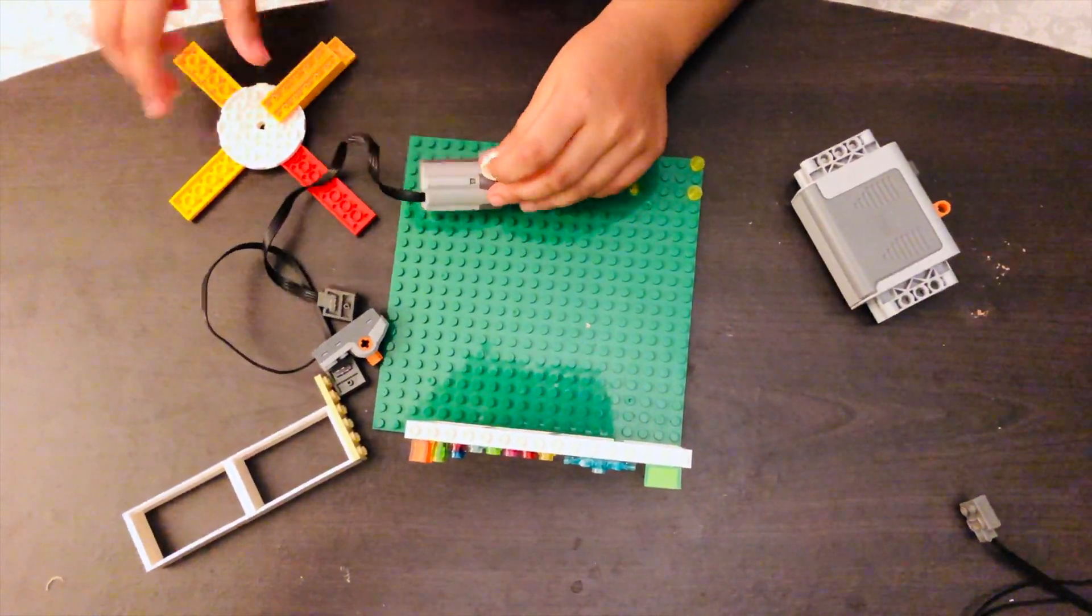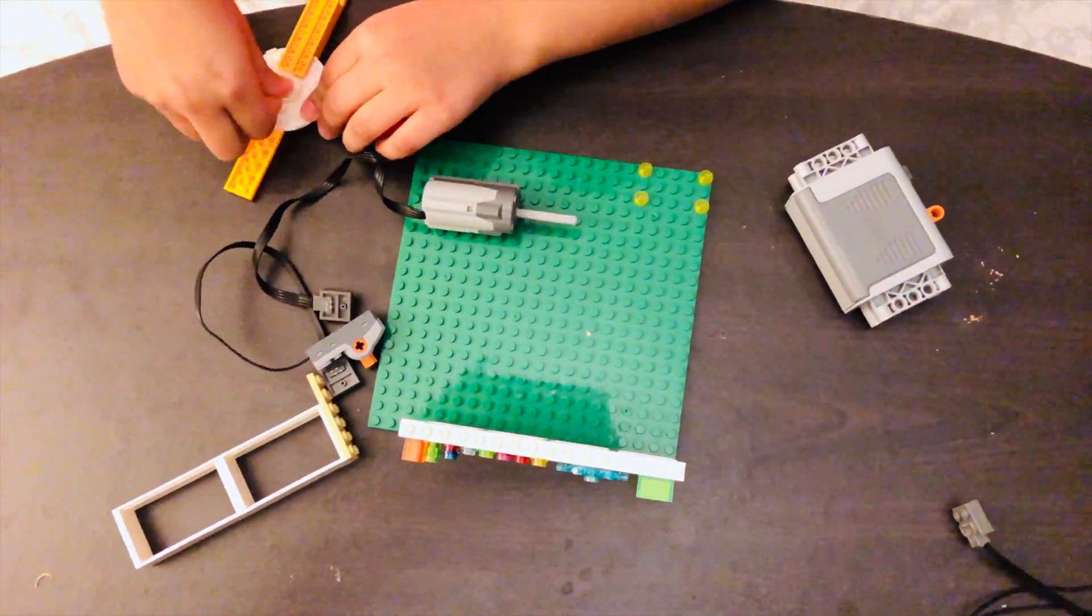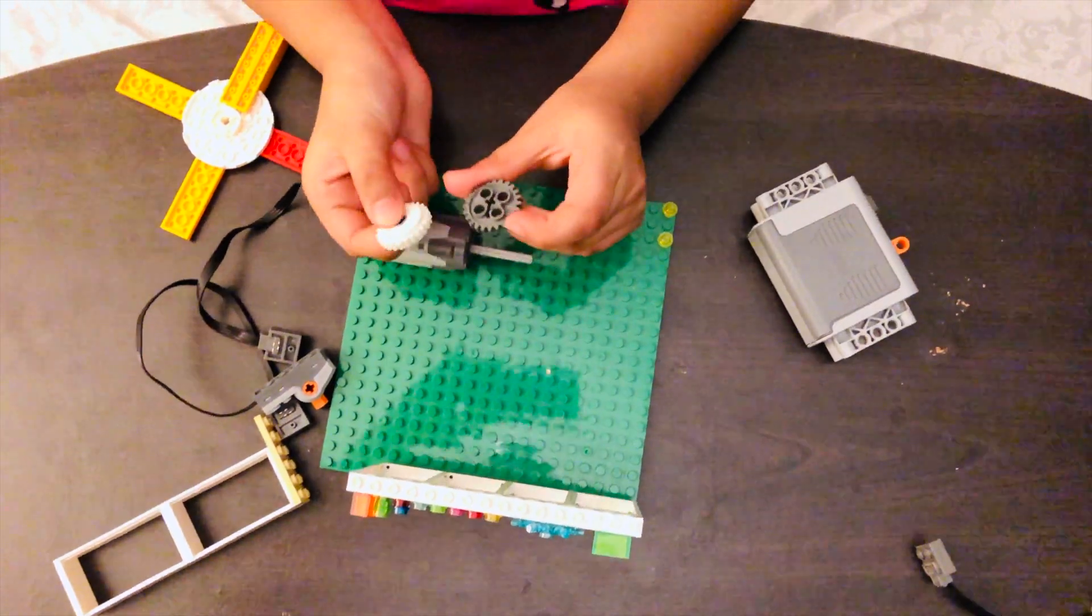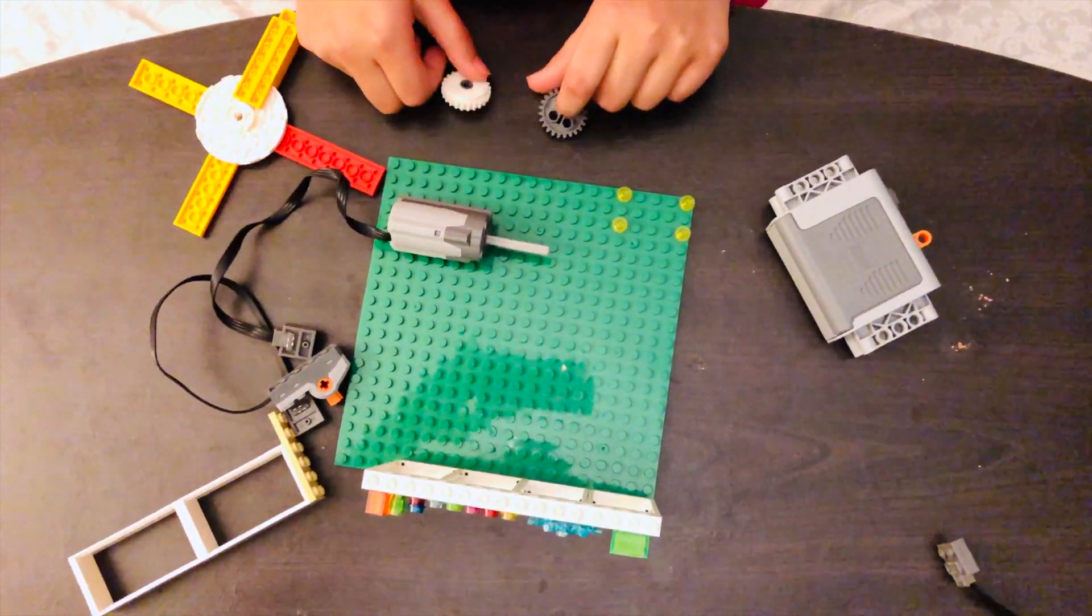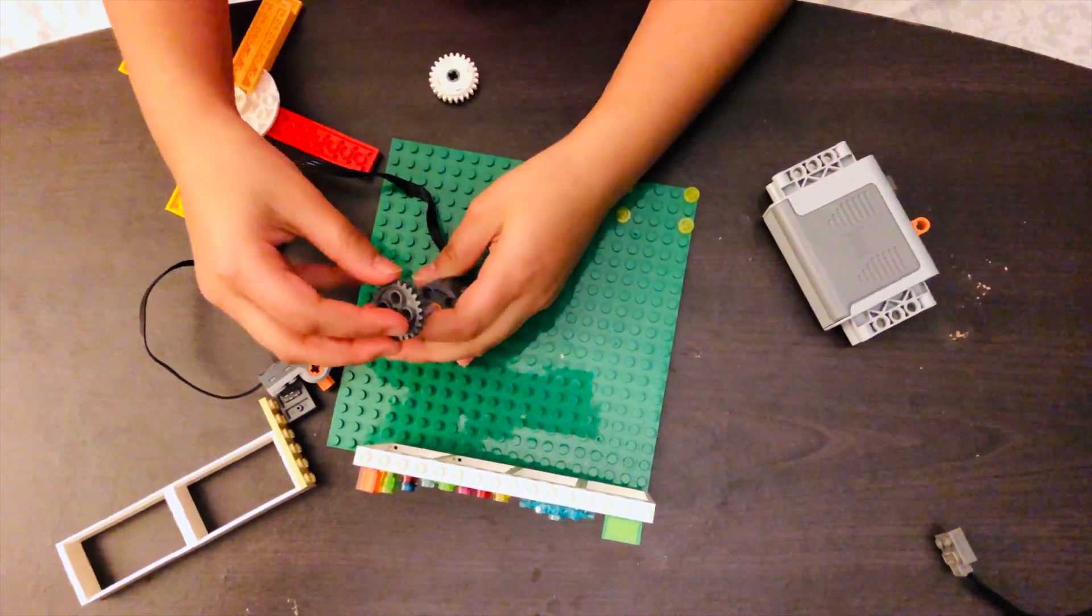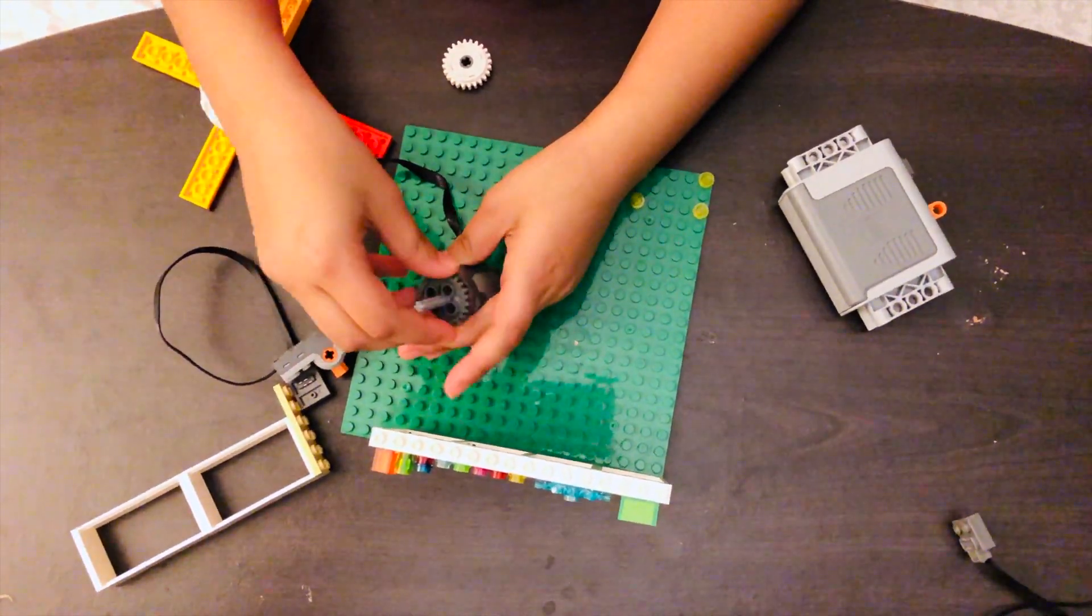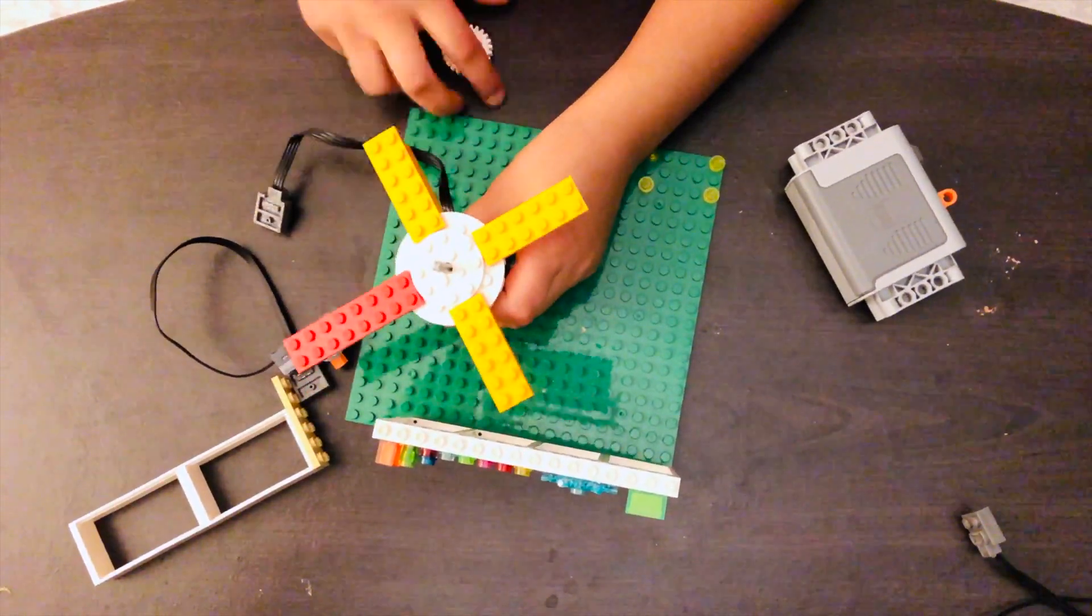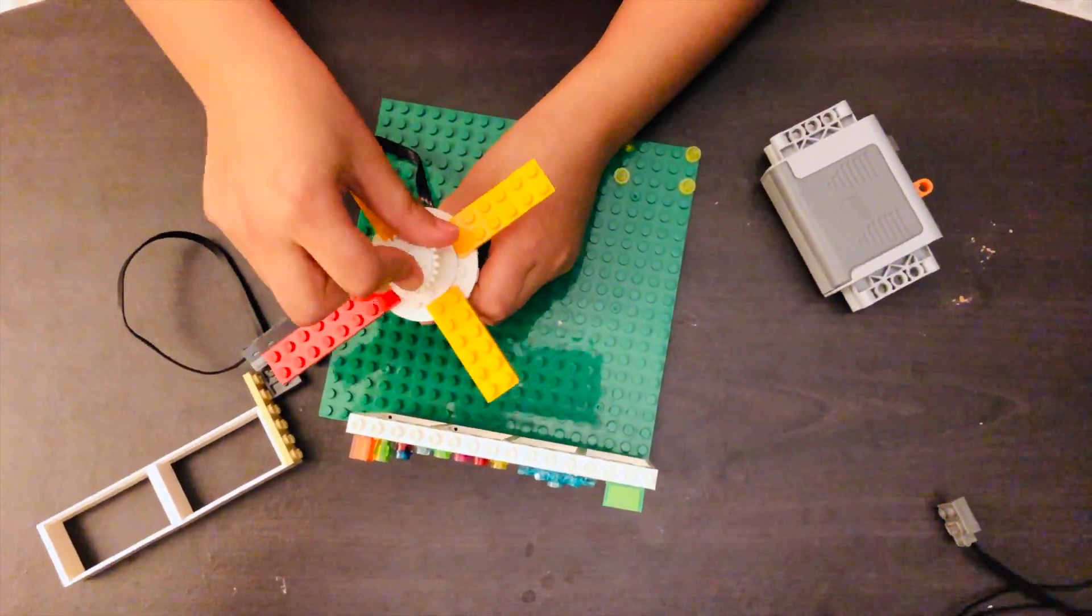But since it was a bit loose, I added these two gears which are also included in the Lego power function set. And how I made this is I did this. I added this on top and put this.